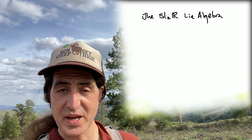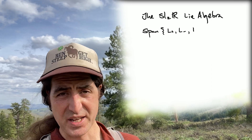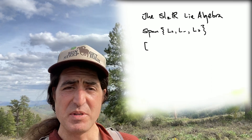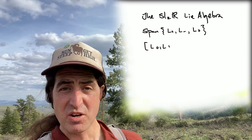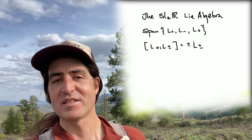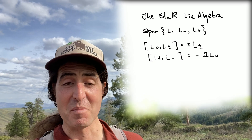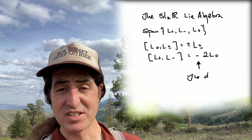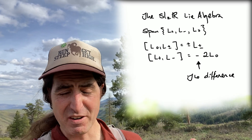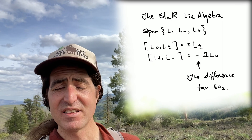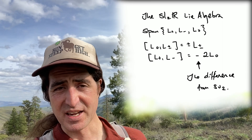At this point it's also worth reminding ourselves about SL2R, the algebra itself. Remember it's also spanned by three elements: L plus, L minus, and L zero. The commutation relations are also pretty simple: [L0, L±] = ±L± and [L+, L-] = -2L0, which is very similar to SU2, as you might recall, but for that minus sign.